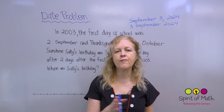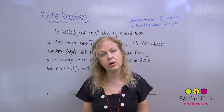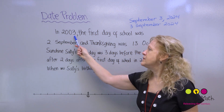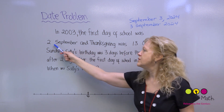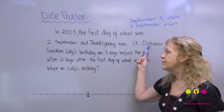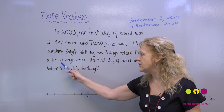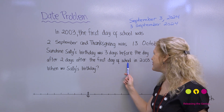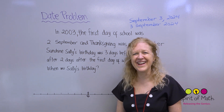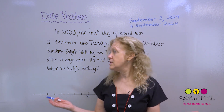With date problems, we're going to go before and after to figure out what day is the answer. Here's the question: In 2003, the first day of school was the 2nd of September, and Thanksgiving was the 13th of October. Sunshine Sally's birthday was 3 days before the day after 2 days after the first day of school in 2003. When was Sally's birthday? Oh, that's a lot.